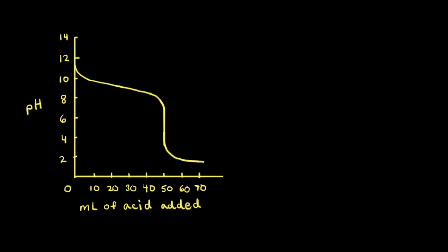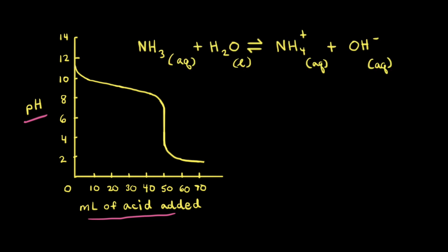Next, let's look at the titration curve for our weak base/strong acid titration. pH is on the y-axis and milliliters of acid is on the x-axis, because we're adding our strong acid to our aqueous solution of the weak base.